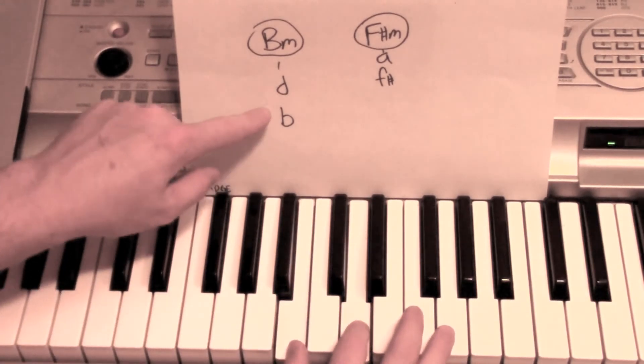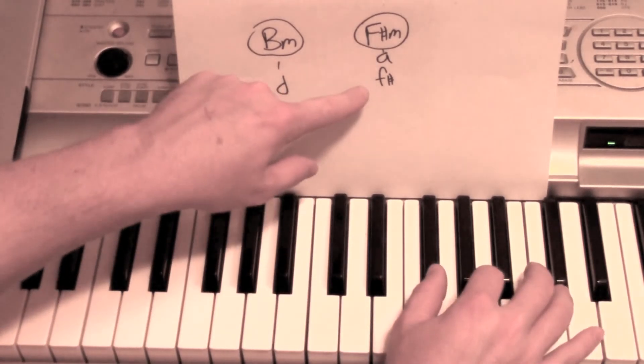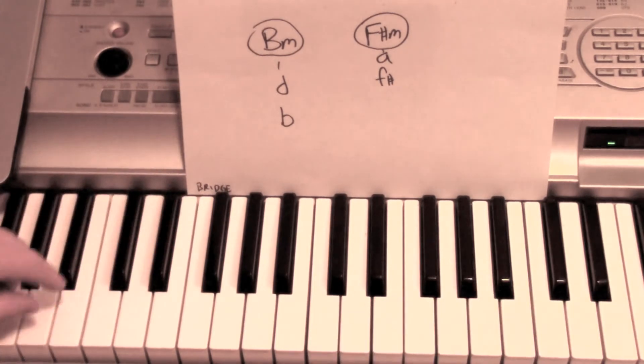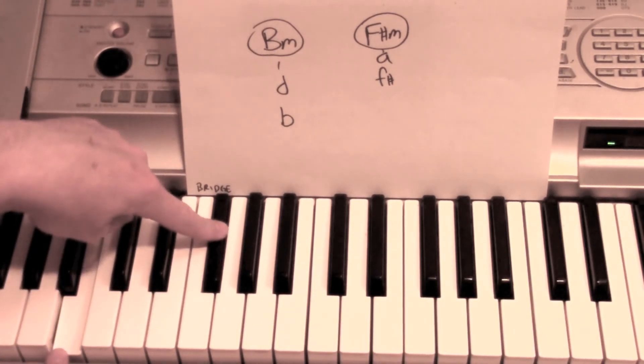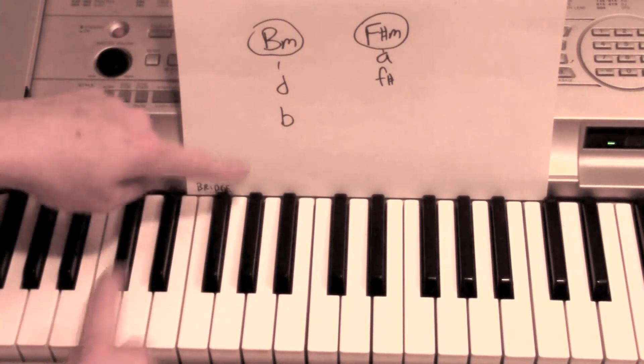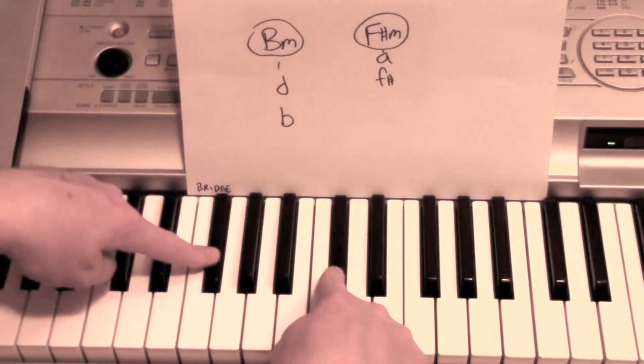So right hand is still using the B and the D, and then it goes up to F sharp and A. Same chords in the left hand, going from the B minor chord to the F sharp minor, using those two in the left hand.